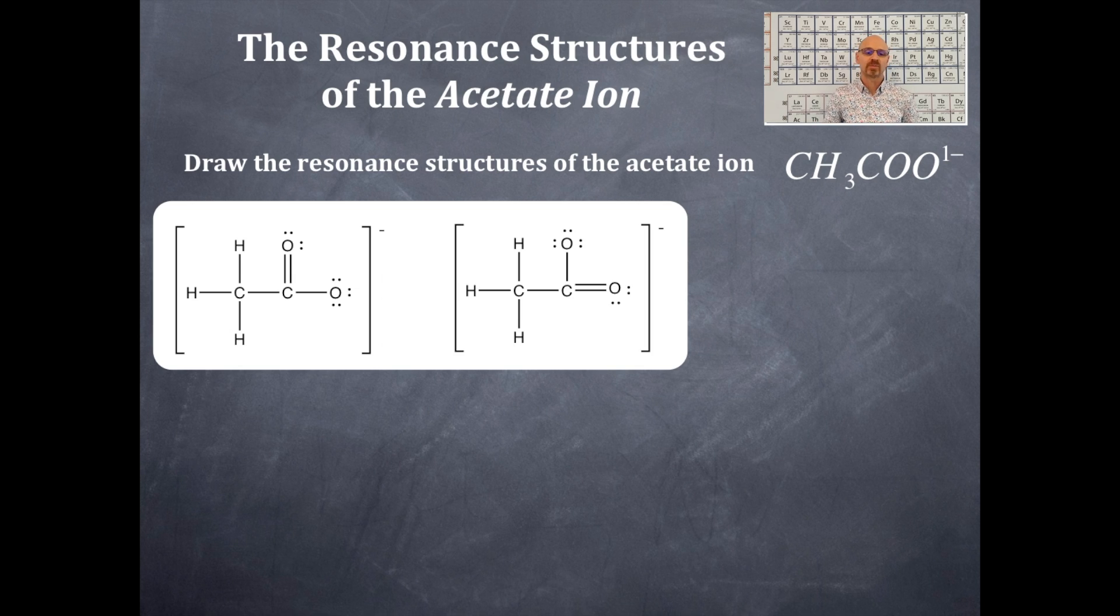We're going to switch the double bond. So I've done that right here, and I still have the brackets. And what we're going to do is we're going to put a double-headed arrow in between every single resonant structure. That's showing you that they are like equivalent structures, if you will.